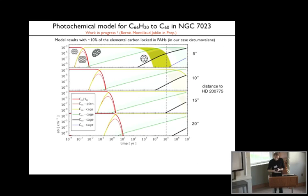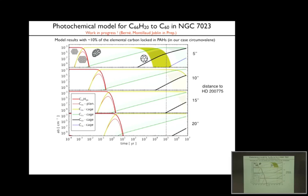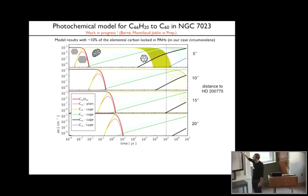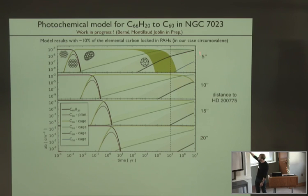These are the results for the model. Shown here is the evolution of the abundance of different species as a function of time, for four different positions in the nebula: at 5 arcseconds from the star—very close, where the radiation field is very strong and the density is low—and then at 10, 15, and 20 arcseconds. The density increases and the radiation field decreases as you go from the upper to the lower panel.